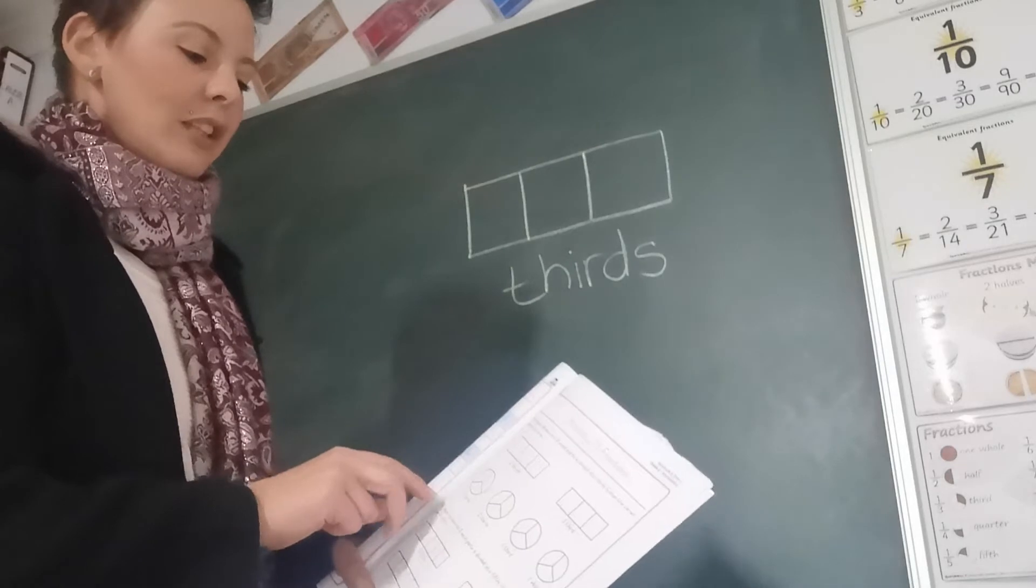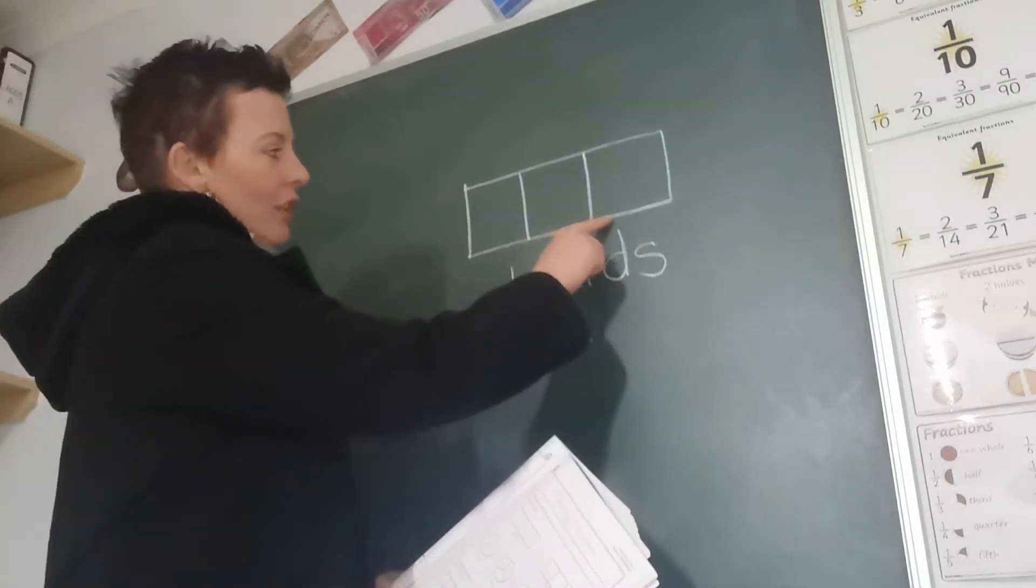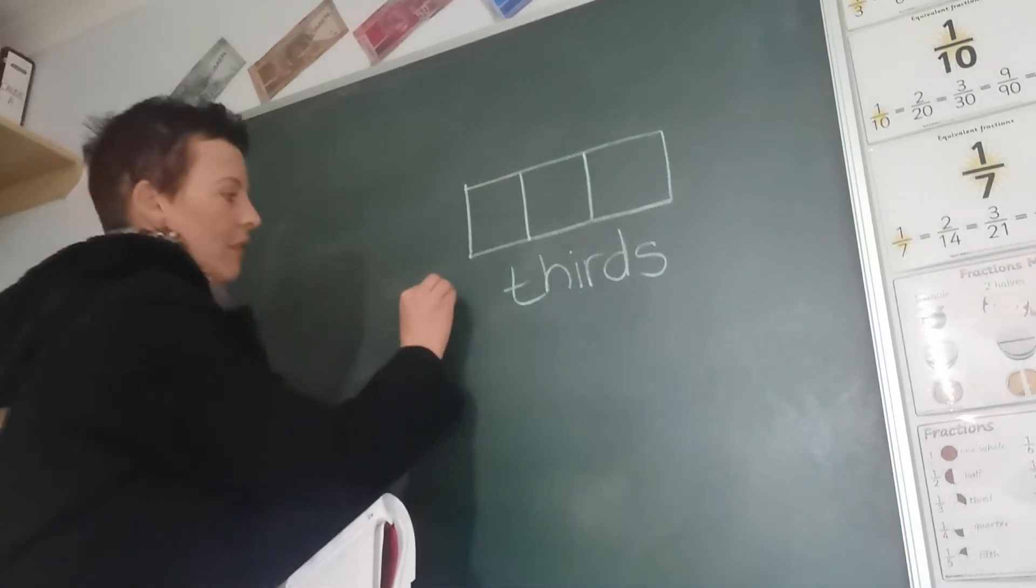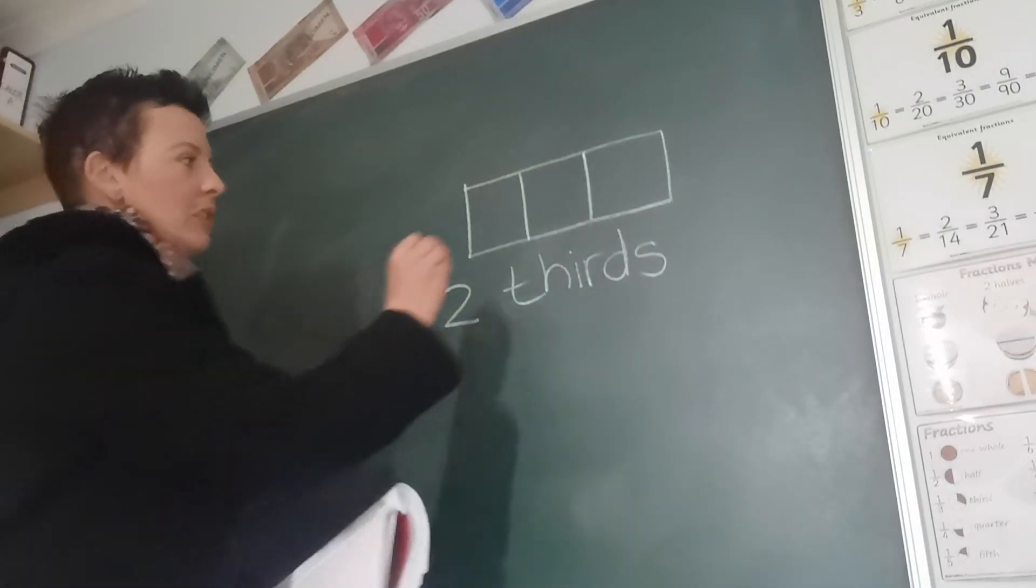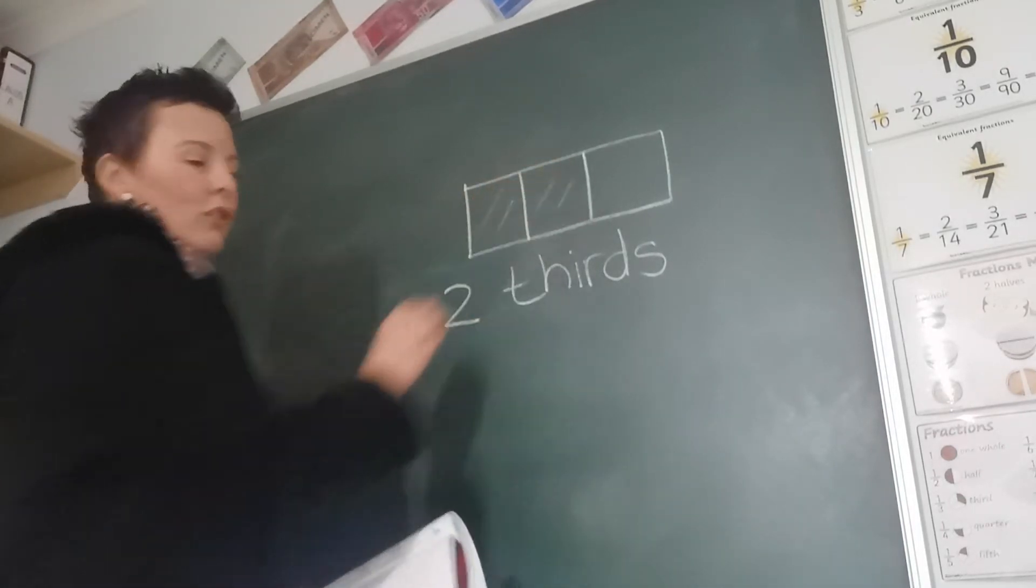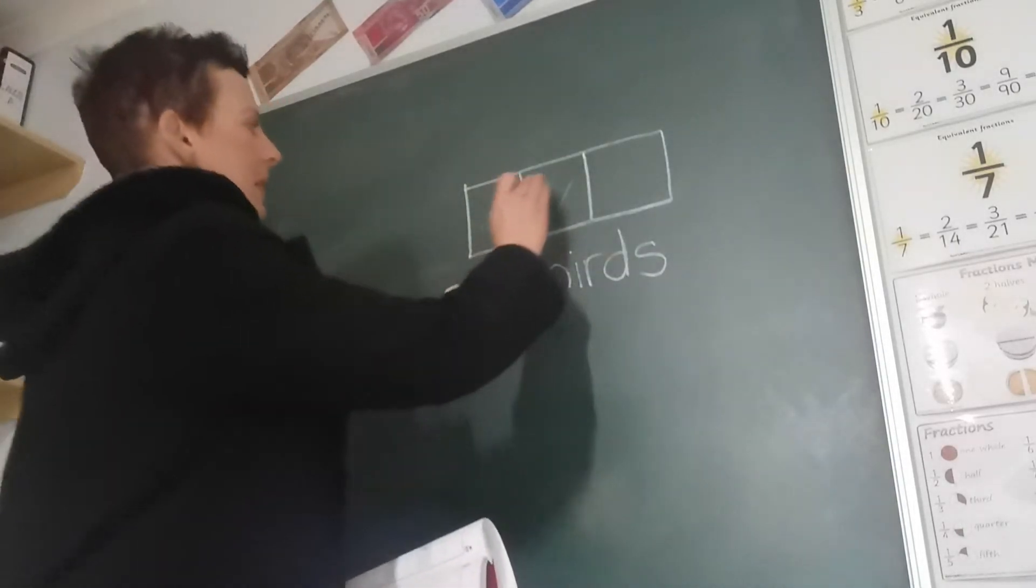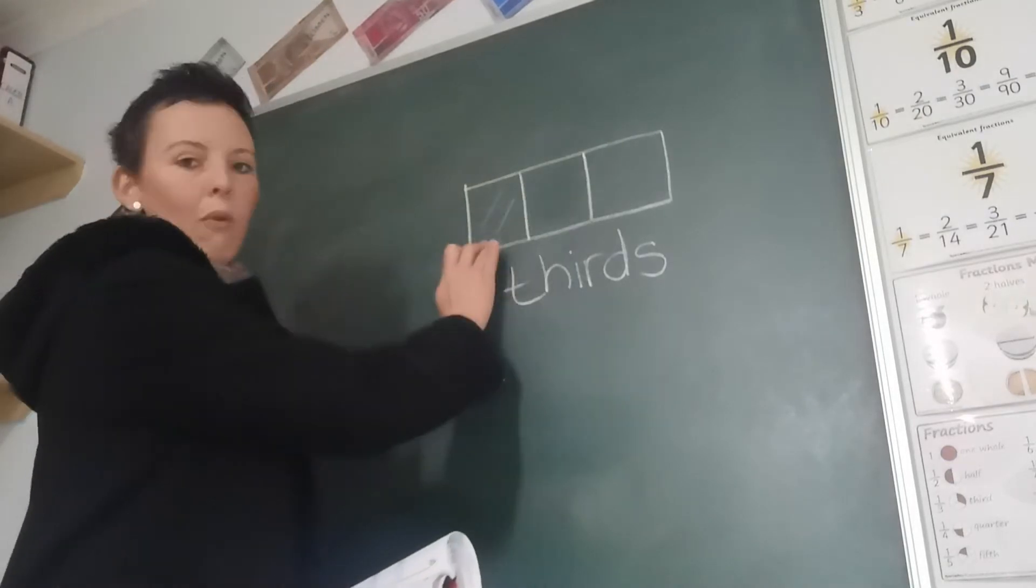Okay, so they are going to give you shapes that are divided into thirds and they're going to tell you how many thirds to color in. So if they give you 2 thirds, it means you color in 1, 2. If they say color in 1 third, it means you're going to color in only 1.